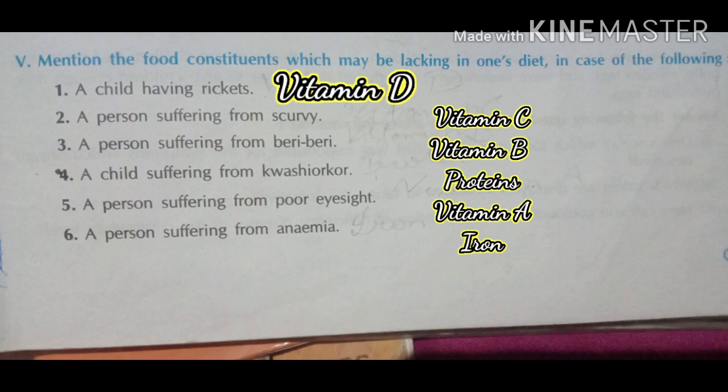Fourth: a child suffering from kwashiorkor — protein. Fifth: a person suffering from poor eyesight — Vitamin A. Sixth: a person suffering from anemia — iron.